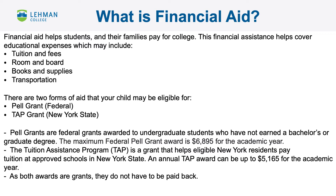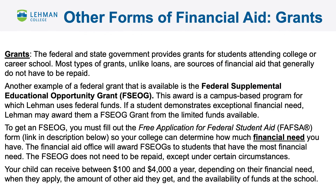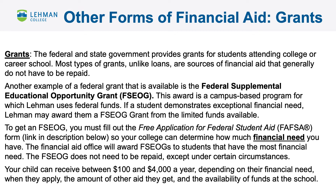Pell Grants are federal grants awarded to undergraduate students who have not earned a bachelor's or graduate degree. The maximum federal grant awarded is $6,895 for the academic year. The Tuition Assistance Program, or TAP, is a grant that helps eligible New York residents pay tuition at approved schools in New York State. As both awards are grants, they do not have to be repaid.